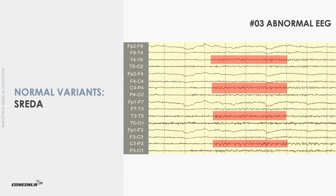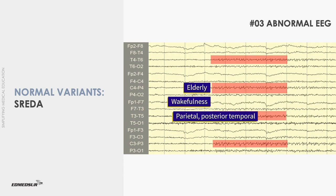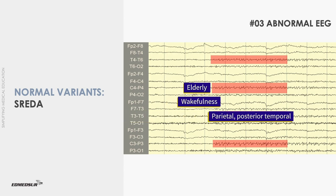The typical pattern of subclinical rhythmic EEG discharges of adults consists of sharp theta waves. Their duration varies from a few seconds up to two minutes, and they either end abruptly or gradually diminish and merge with the background. They occur mainly in elderly individuals during wakefulness, during or shortly after hyperventilation, and occasionally during sleep. They are seen maximally over the parietal and posterior temporal region, mostly in a bisynchronous and symmetrical manner.